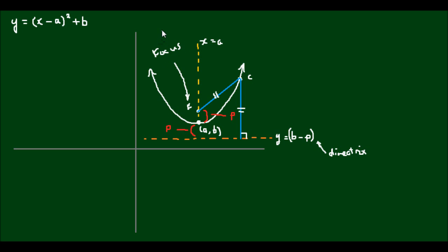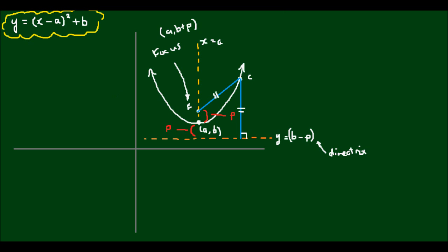The focus point f is simply going to be at x = a and y = b + p. So from this diagram I'm going to construct an equation for this parabola in conic form. Here we have the vertex form of the parabola, and what I want to do is derive the conic form by equating the two distances: fc and then c to point d, which lies on the directrix.